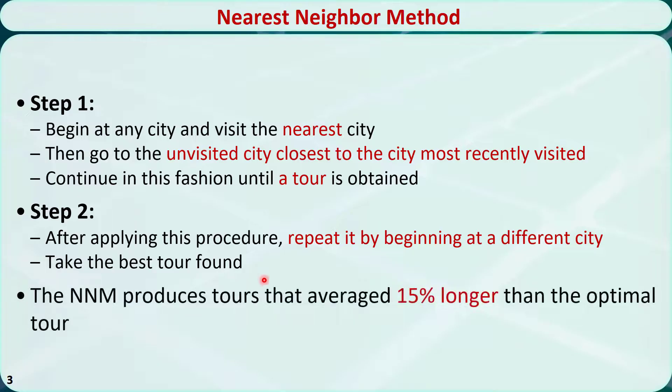Some statistics show that the nearest neighbor method produces tours that are on average 15% longer than the optimal tour.